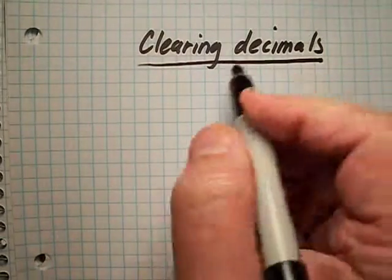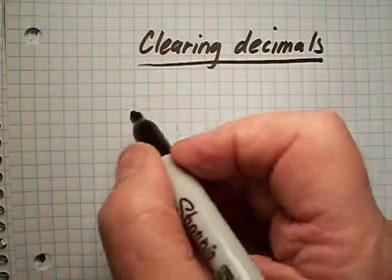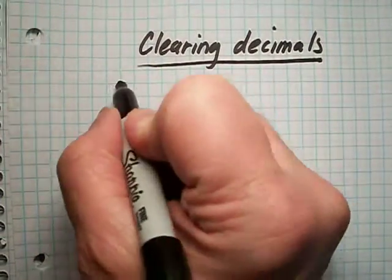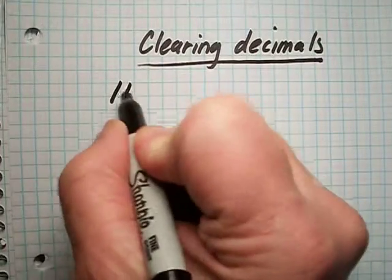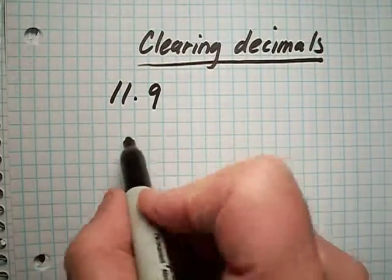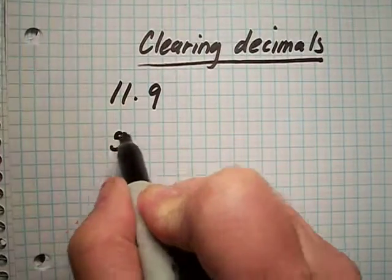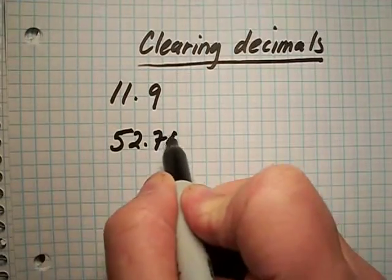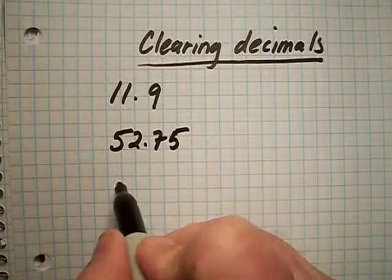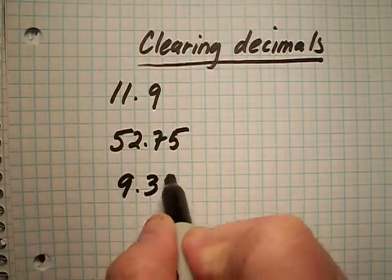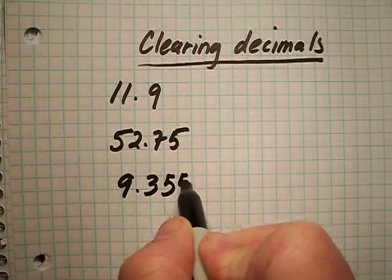I wanted to talk about clearing decimals when you're working with equations. So let's look at some decimals: 11.9, 52.75, and 9.355.